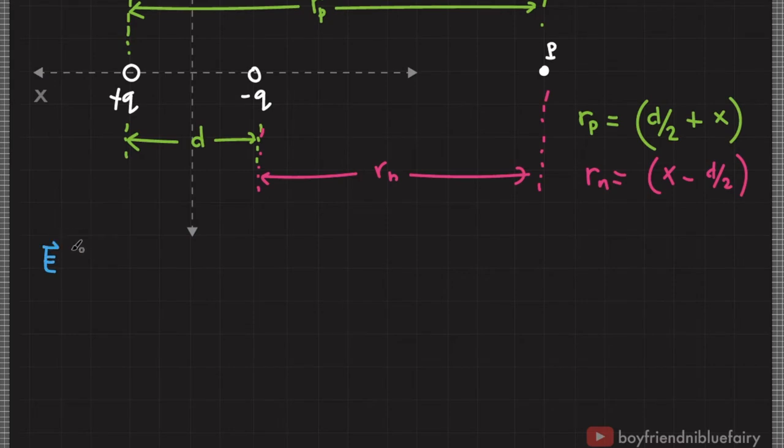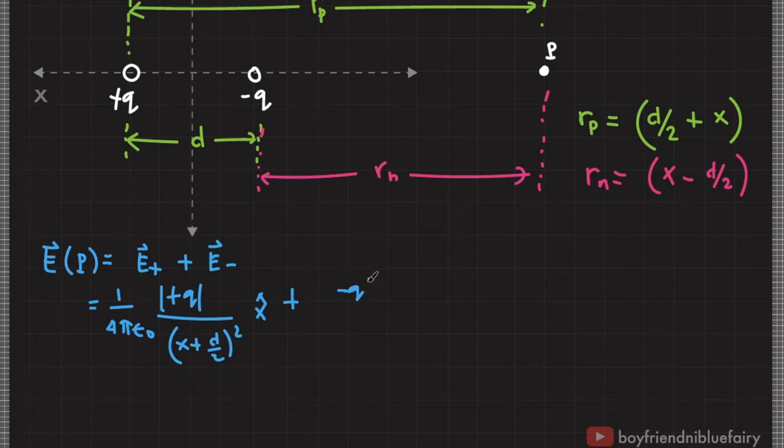The vector sum of the electric field at point P is E sub positive plus E sub minus. E equals 1 over 4 pi epsilon naught, absolute value of positive charge divided by quantity x plus d over 2 squared x hat plus the absolute value of negative charge divided by x minus d over 2 squared quantity negative x hat. This is negative because the electric field generated by negative charge points to the left.